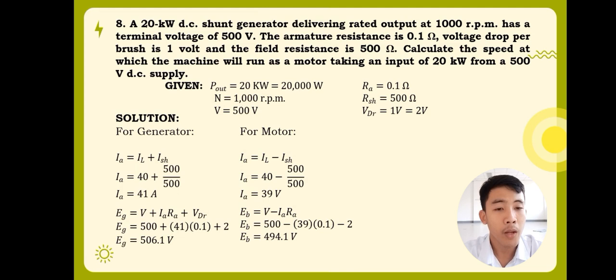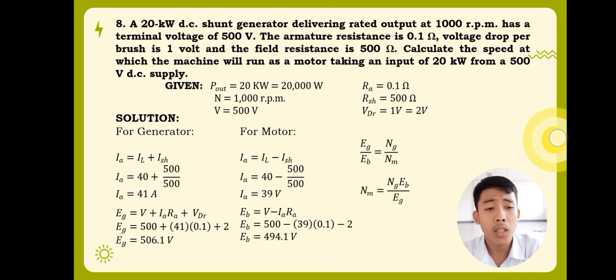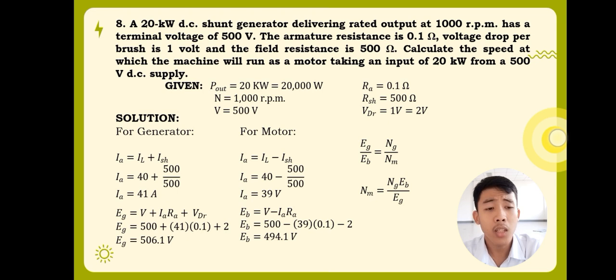Lastly, to calculate the speed at which the machine will run as a motor, taking an input of 20 kilowatts from a 500 volts DC supply, we will now use the formula, EG over EB is equal to NG over NM. The NG is for the speed of the generator, while the NM is for the speed of the motor. And since we're finding the speed of the motor, we would isolate NM, which would yield NM is equal to NG times EB over EG. So that means the speed of the generator times the back EMF divided by the generated EMF. Substituting the values, now we will have the speed for the motor is equal to 1,000 times 494.1 all over 506.1. And when input in a calculator, calculated, the value for the speed of the motor is equal to 976.28 or 976.3 revolutions per minute.